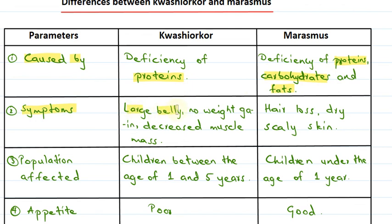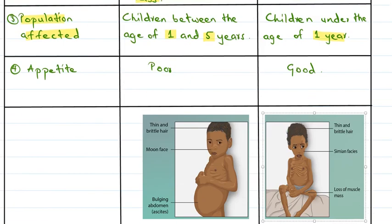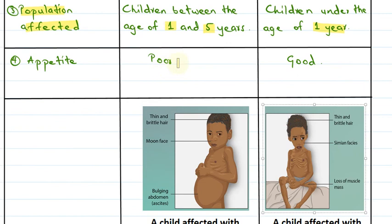In Kwashiorkor, the symptoms included a large belly, no weight gain, and decreased muscle mass, whereas in Marasmus, the symptoms include hair loss and dry and scaly skin. In Kwashiorkor, children between the ages of 1 and 5 years are affected, whereas in Marasmus, children under the age of 1 year are usually affected. In Kwashiorkor, the appetite is poor, whereas in Marasmus, children have good appetite.